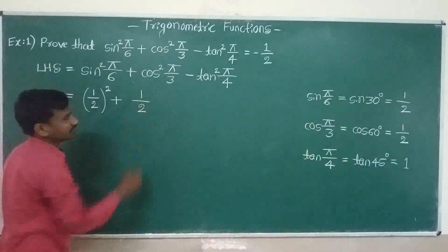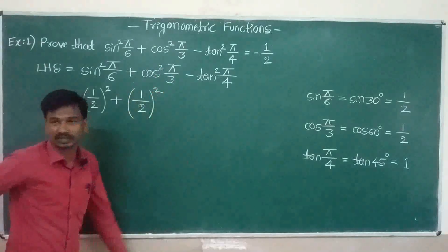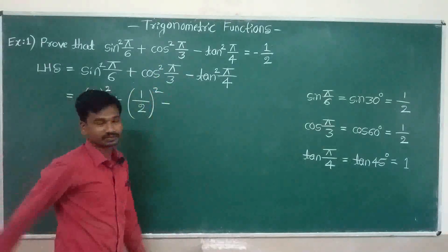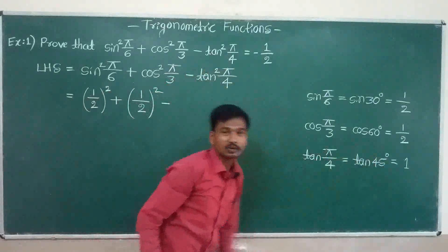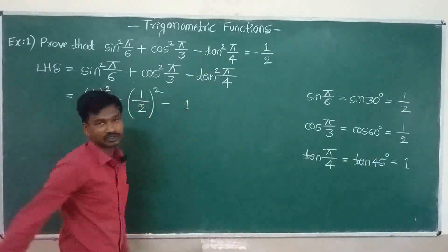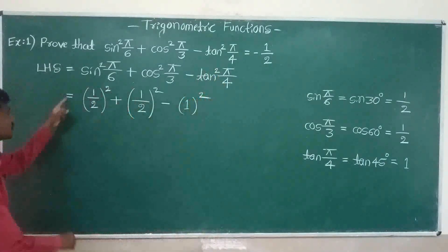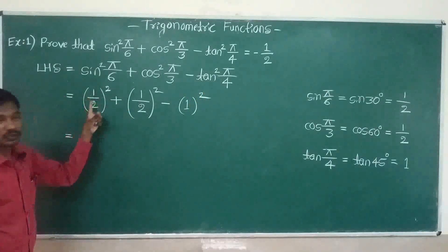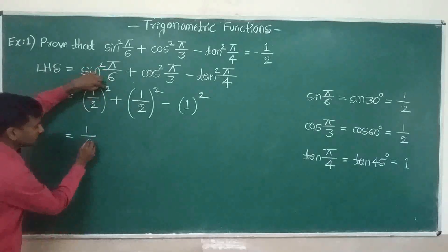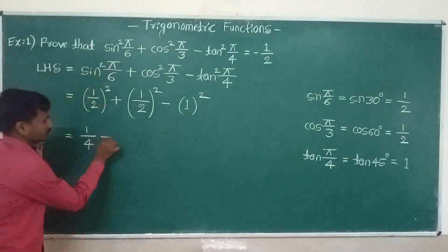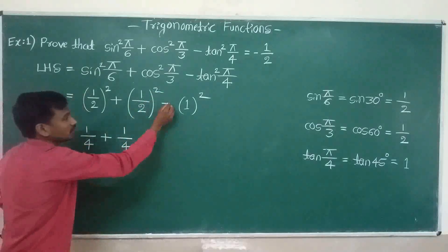Cos squared is the whole square. Minus — tan pi divided by 4 value is 1 — tan squared is equal to 1 squared. So this is equal to: 1 divided by 2 squared is 1/4, plus 1 divided by 2 squared is 1/4, minus 1 squared is 1.